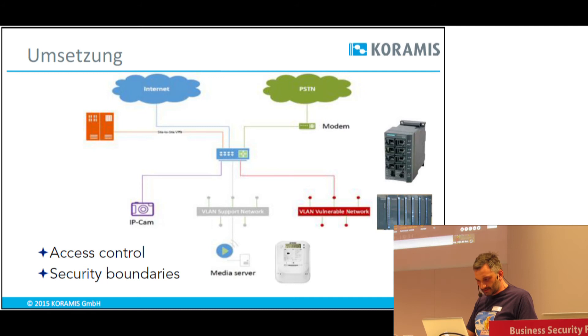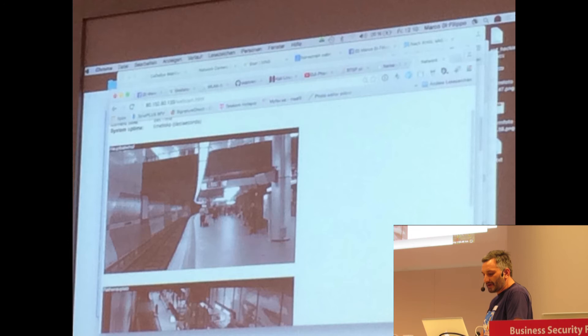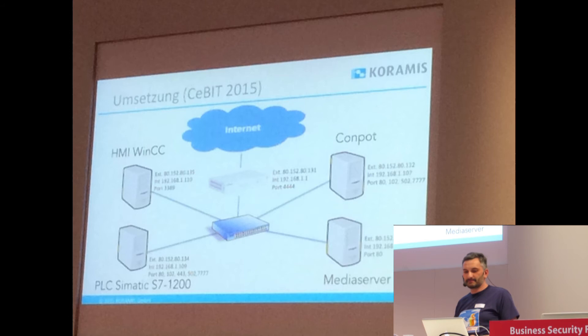Das kann ich hier sogar mal zeigen. Wir können jetzt einfach auf die U-Bahn hier vorne zugreifen. Das ist die 133, und ich habe hier eine Webcam. Das sind Bilder, die wir uns von der U-Bahn in Nürnberg übernommen haben. Der Angreifer hat so den Eindruck, dass er ein echtes System kompromittiert.